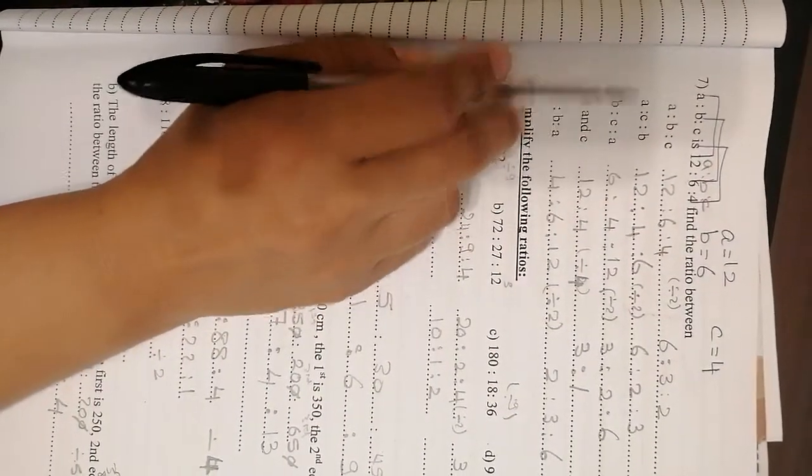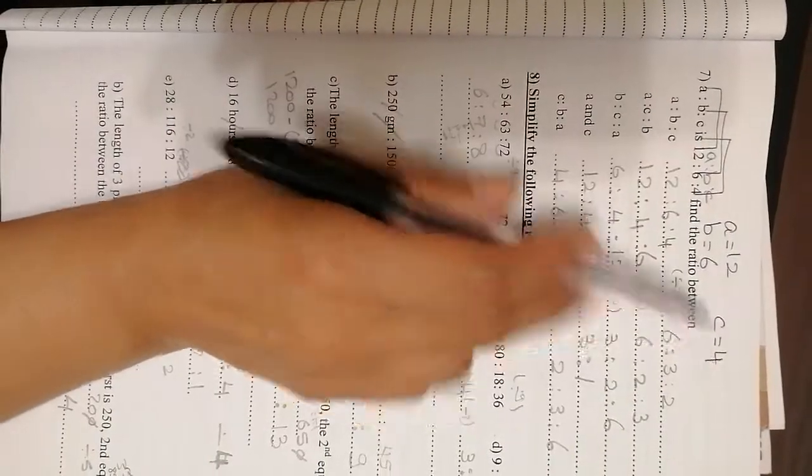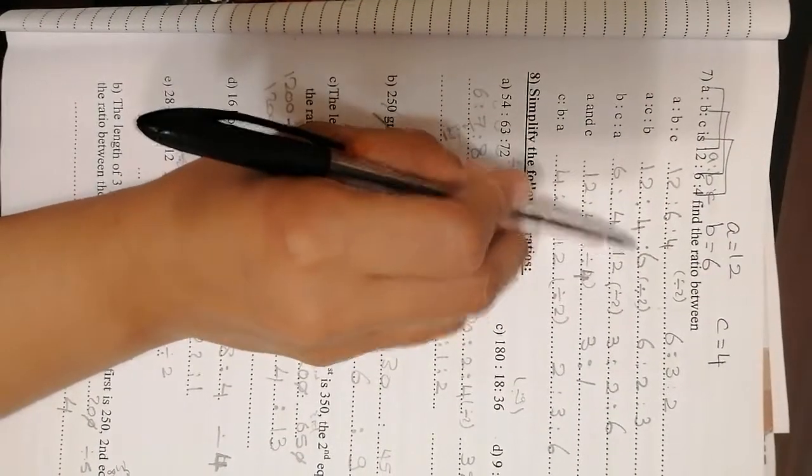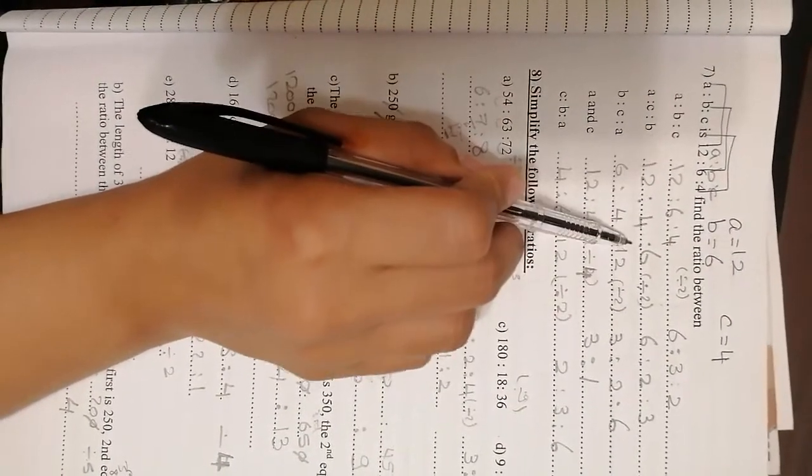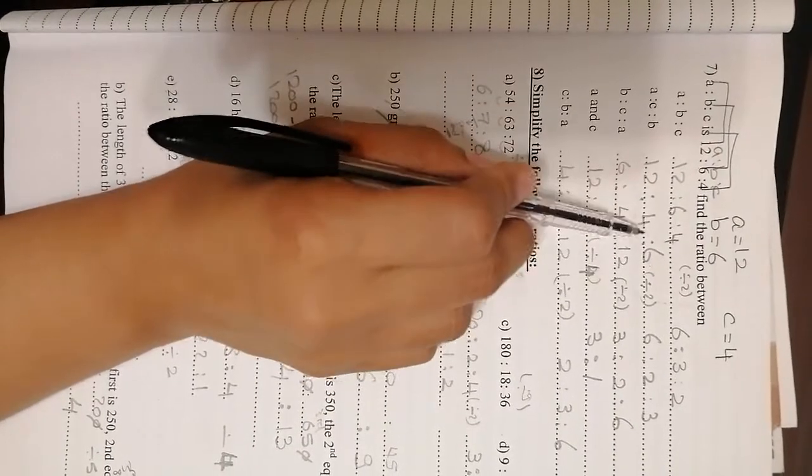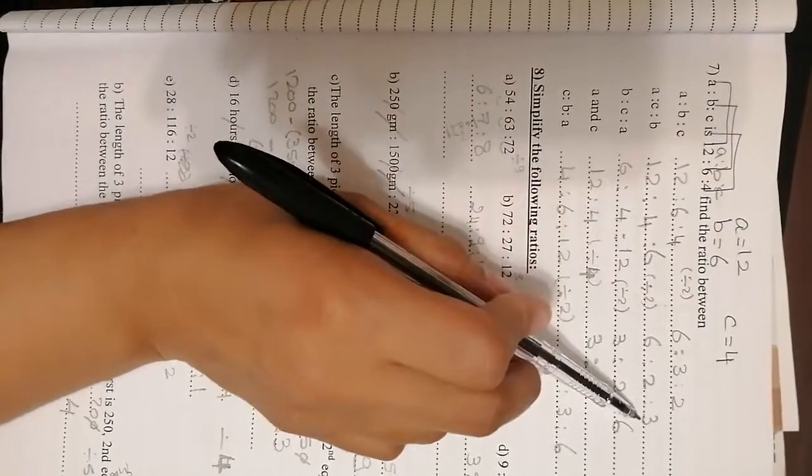A to C to B, A is 12, C is 4 and B is 6. These 3 numbers are divisible by 2, so we are going to make every number divided by 2. The answer will be 6 to 2 to 3.